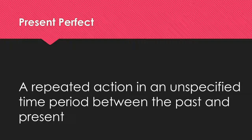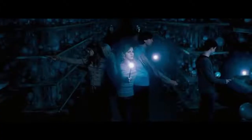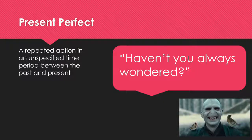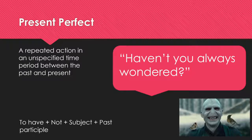We use the present perfect to talk about repeated actions in an unspecified period between the past and now: 'Haven't you always wondered?' Here it's a negative question, so we begin with 'to have' plus 'not,' plus the subject 'you,' plus the past participle of 'wonder,' which is 'wondered.'